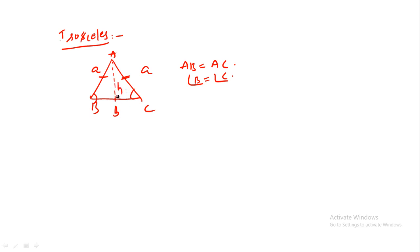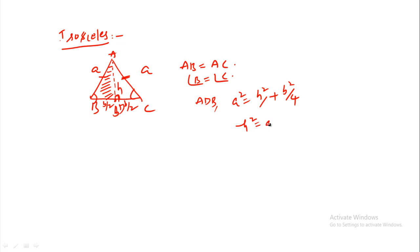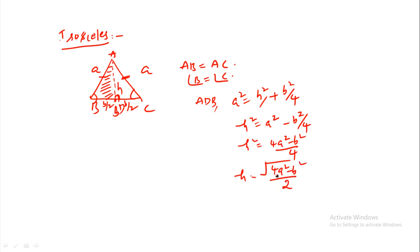For an isosceles triangle, drawing the height gives a right angle. With equal sides a and base b, using Pythagoras: a squared equals h squared plus b squared over 4, so h squared equals 4a squared minus b squared over 4, giving h equals the square root of 4a squared minus b squared, divided by 2.